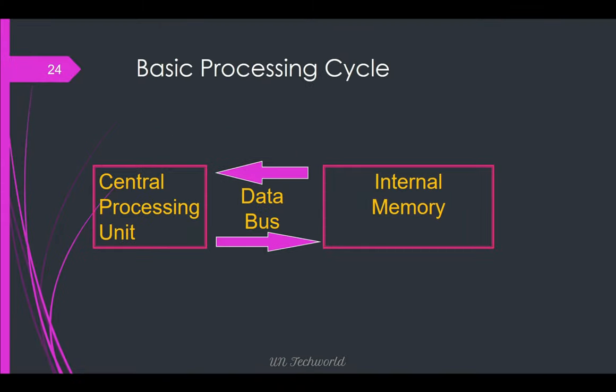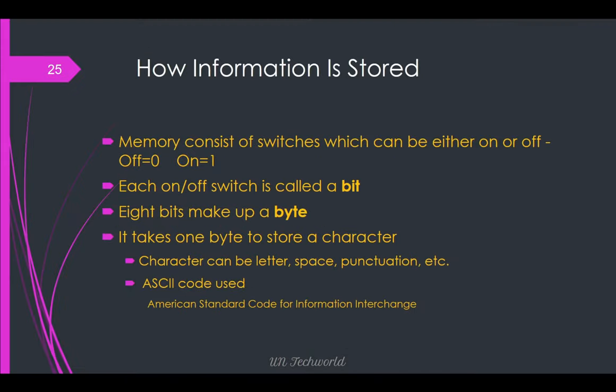Basic processing cycle: Central processing unit, data bus, and internal memory. How information is stored: memory consists of switches which can be either on or off — that is 0 or 1. The computer only knows 0 or 1. Each on/off switch is called a bit. 8 bits make a byte. It takes 1 byte to store a character. A character can be a letter, space, or function. ASCII code is used for computer data storing — it stands for American Standard Code for Information Interchange.